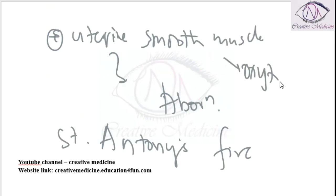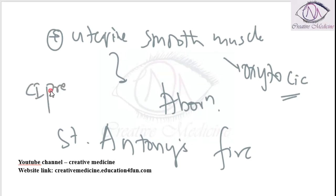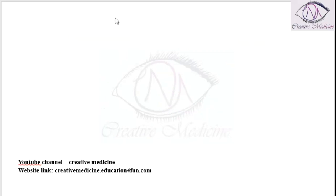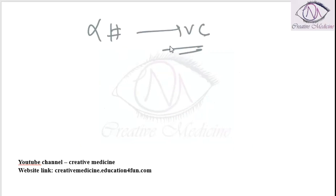It can be said to have an oxytocin-type of action on uterine smooth muscles. Because it causes abortion, it is contraindicated in pregnancy. Ergot alkaloids are unique alpha blockers — they are the only alpha blockers which cause vasoconstriction.